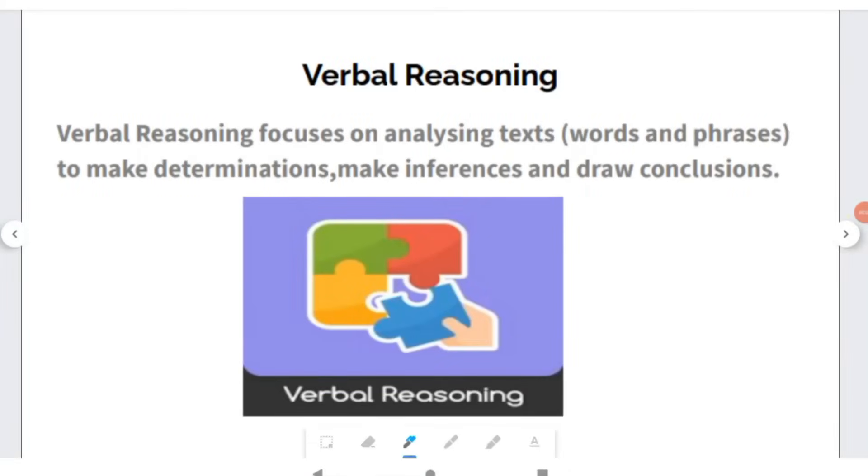The Verbal section of the Ability Test is where students analyze text and make inferences and conclusions, while the Quantitative Reason section looks at how students use mathematical concepts to solve problems. Verbal Reason Question Types focuses on analyzing text to make determinations, make inferences, and draw conclusions.